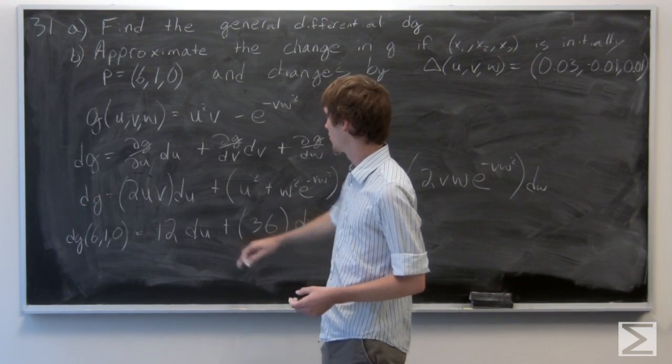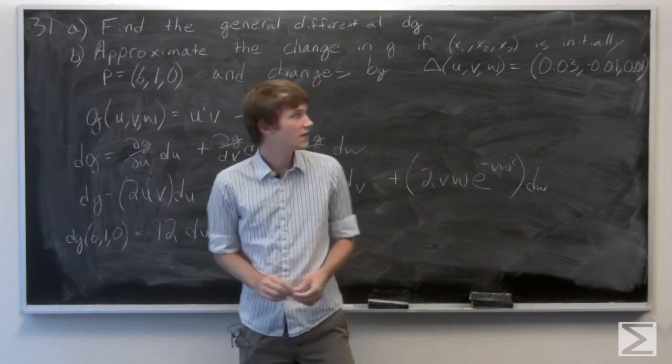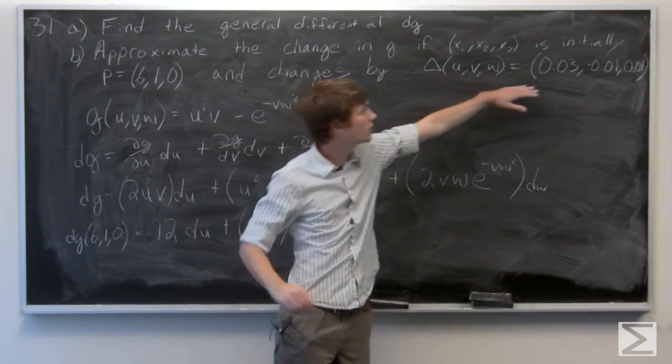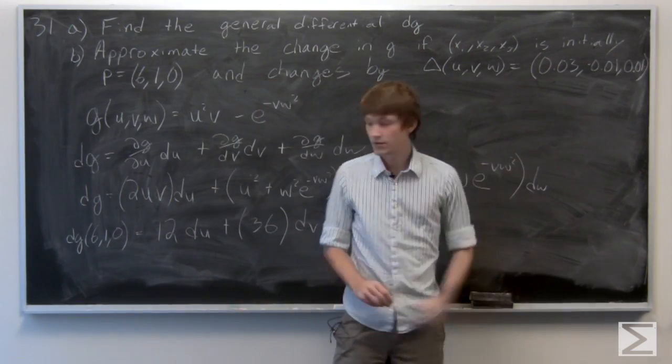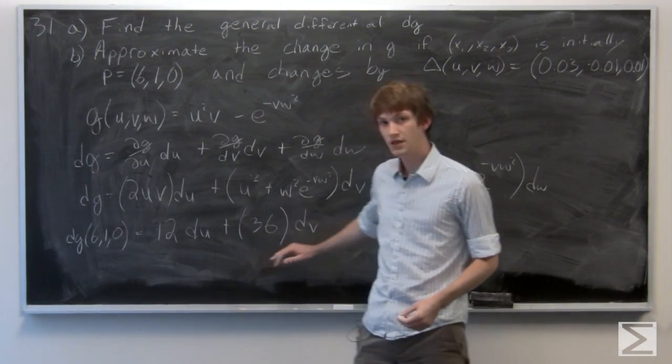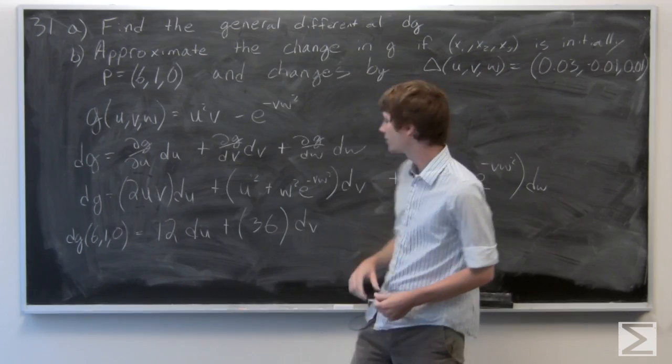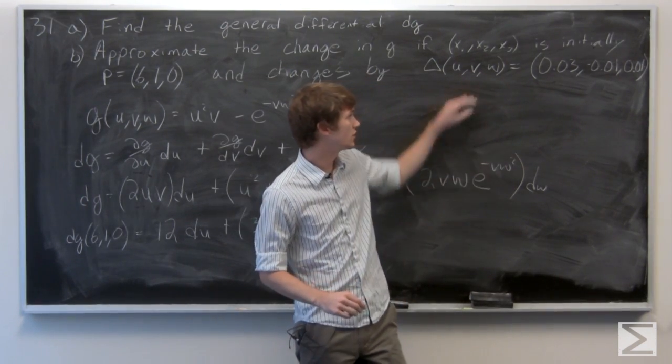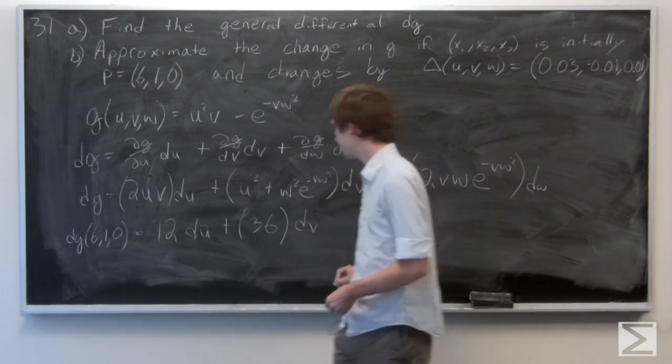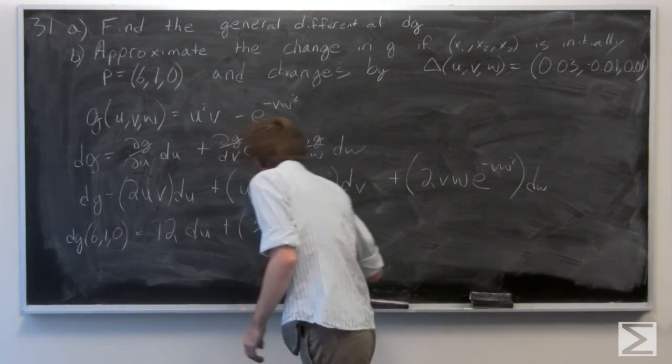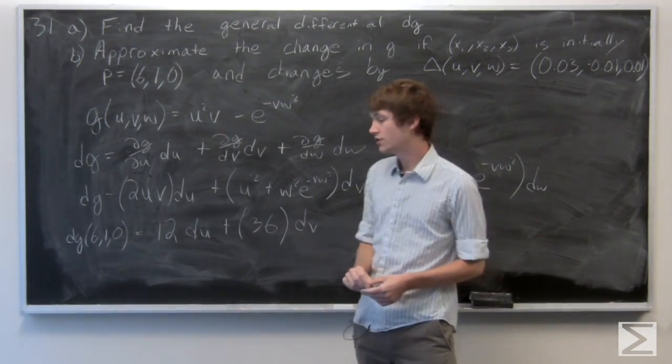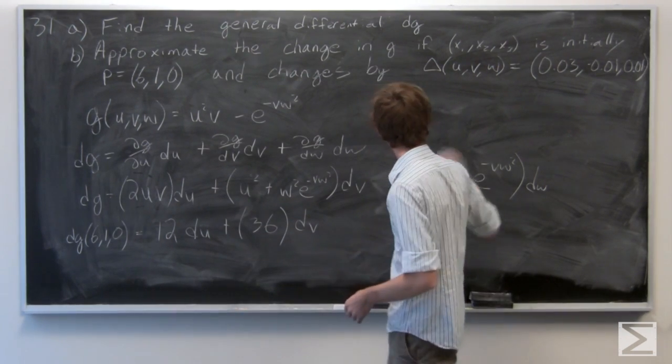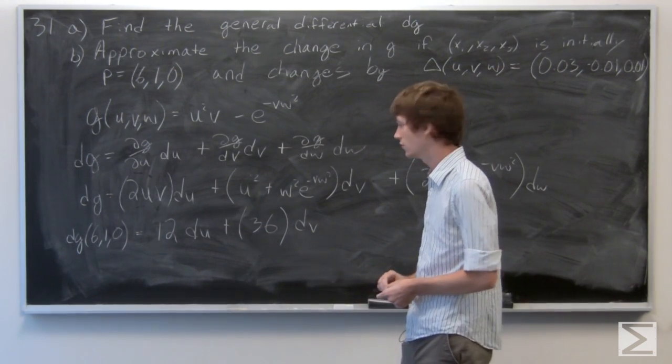And now we're going to approximate the change in g if our change in u v w is given by this factor. So we can just take the du and dv to be the change in u and the change in v. So we'll just plug in 0.03 for du and -0.01 for dv.